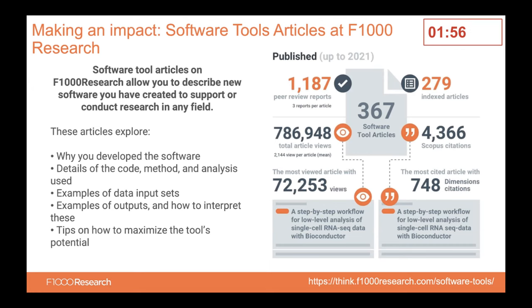I wanted to give some insights into an article type published on the F1000 Research publishing platform that allows authors to describe any new software they've developed to support their research. Unlike a standard research article, software tools articles don't ask the author to describe their hypothesis, methods, and results. Instead, they allow authors to describe the context for their software, why it was developed, details of the code, any inputs and outputs, and tips for future users.